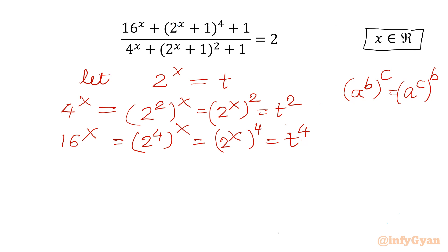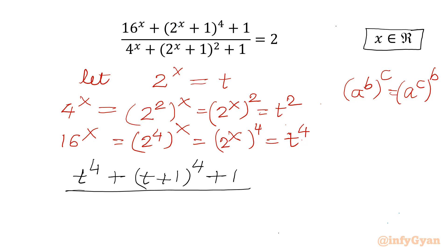Let's substitute these values. So 16^x becomes t^4, plus (2^(x+1)) becomes (t+1)^4, plus 1, divided by 4^x which is t^2, plus (t+1)^2, plus 1, equals 2.